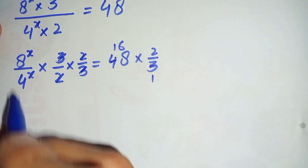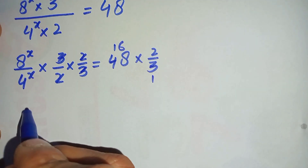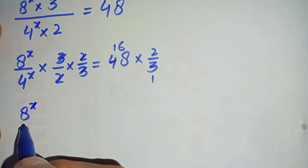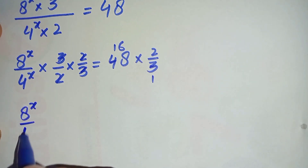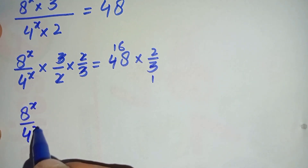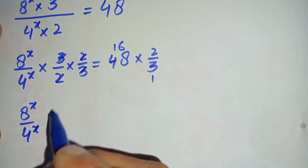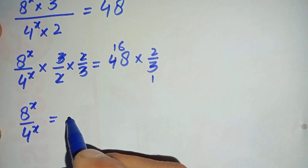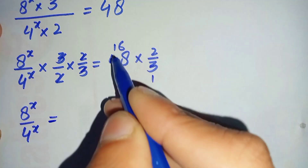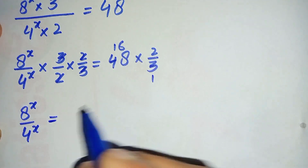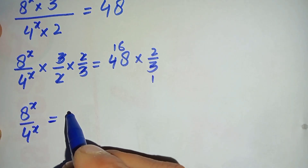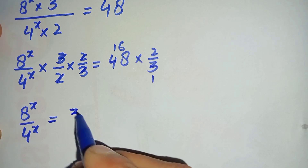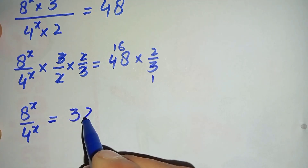So the equation becomes 8 raised to power x divided by 4 raised to power x, equal to 32, since 16 times 2 is 32.